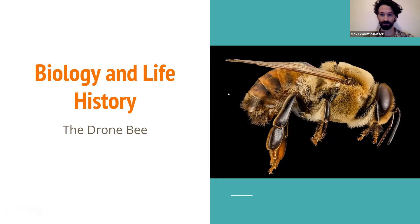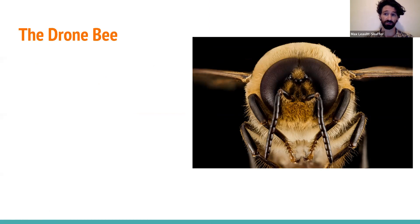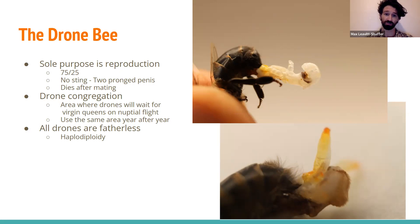Here is a side view and a front view of a drone — this picture really shows how large their eyes are, which we hypothesize are used to spot virgin queens on their nuptial flights. The sole purpose of a drone bee is reproduction. They spend 75% of their time doing absolutely nothing — they can't feed themselves, can't clean themselves, and rely on their sisters to do all the work. That other 25% of the time, they're looking for a mate. Drones congregate in the same area year after year, often at a high location such as a church steeple or a radio tower.